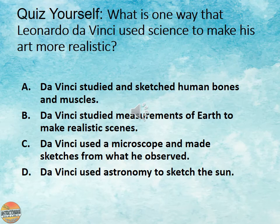Quiz yourself! What is one way that da Vinci used science to make his art more realistic? Is it A, he studied and sketched bones and muscles? Is it B, he studied measurements of the earth to make realistic scenes? Is it C, he used a microscope and made sketches based on what he observed? Or is it D, he used astronomy — the study of the stars — to sketch the sun? Only one of those makes sense, and that would be A.